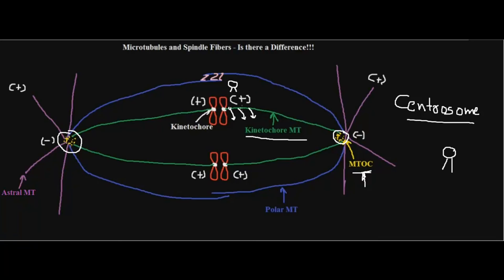As the kinetochore microtubule depolymerizes and shortens, the motor protein walks along it, carrying the chromosome. The chromosome is attached to the motor protein so it does not lose its grip even as the microtubule gets shorter. As seen in animation videos, the spindle fiber shortens and the chromosome is carried away with it. That is how the chromosome gets pulled to each pole.